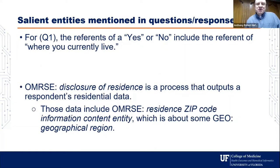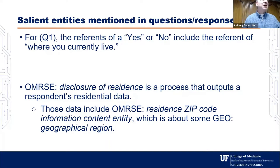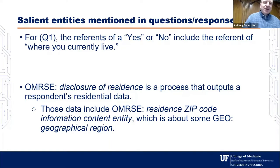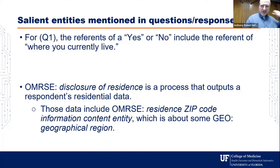For question one, the referents of a yes or no response include where you live. In OMERS — which is how we pronounce that acronym, although Chris Mungle helpfully suggested we pronounce it OMERCY, because working in this area can be difficult sometimes — we had this class already: Disclosure of Residence, a process that outputs a person's address and includes their residence zip code, an information content entity which is about some geographical region.